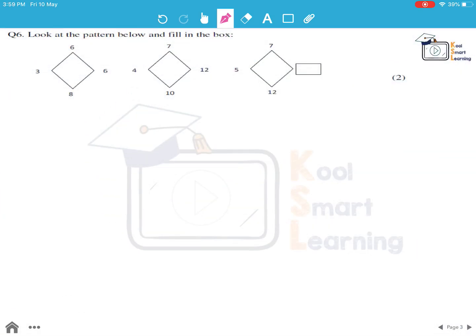So moving to the next question. Look at this pattern below and fill the box. So there is this box which is there and 4 numbers are written on the 4 sides, on the 4 vertices of this figure. Now if we see, we have to make the pattern in all of them and then we have to fill this box.